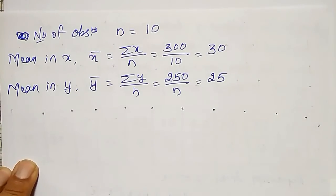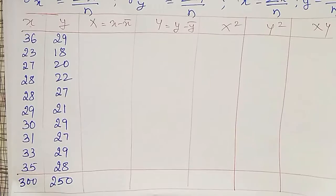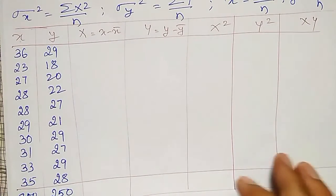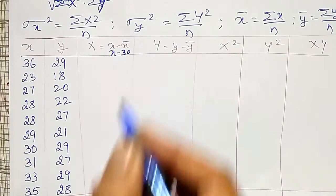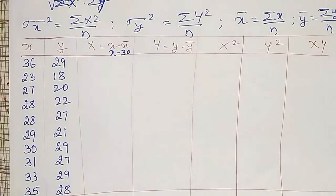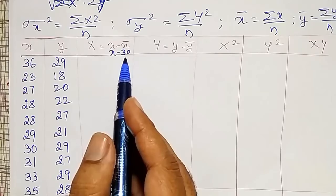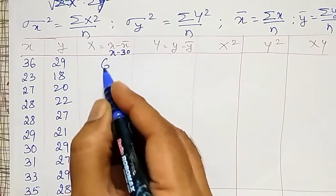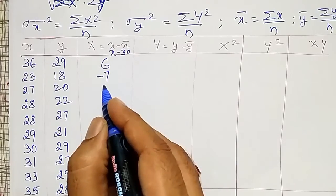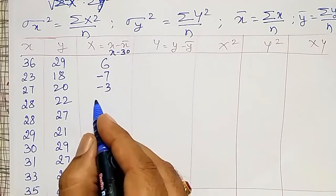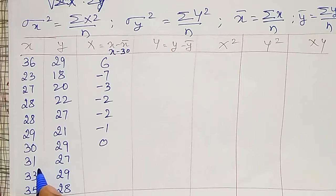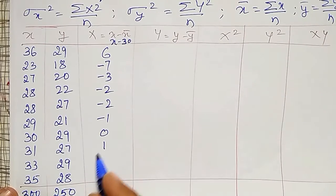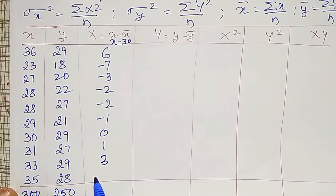Using the means, I will prepare the table. Capital X equals X minus X-bar, that is X minus 30. For X=36: 36 minus 30 is +6. Then 23 minus 30 is -7, minus 3, 27 minus 30 is -2, -2, 29 minus 30 is -1, 30 minus 30 is 0, 31 minus 30 is +1, 33 minus 30 is +3, and 35 minus 30 is +5.